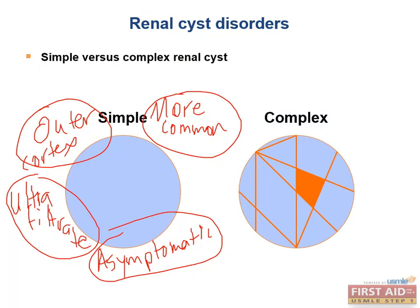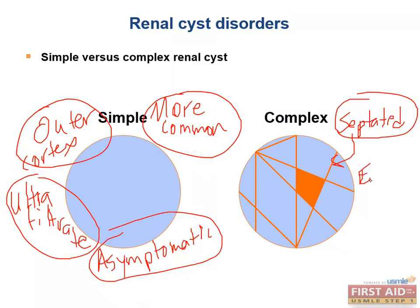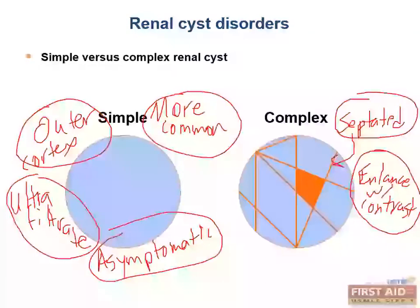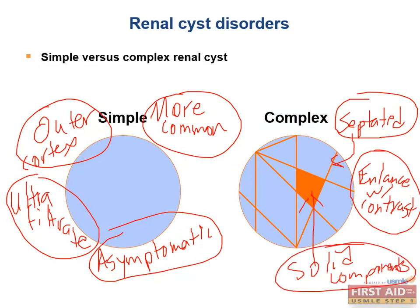Complex cysts, on the other hand, are septated — they have walls that divide them into smaller parts. They enhance with contrast on CT because they have some vascularization, and they have solid components. These require follow-up or removal due to the risk of malignancy, such as renal cell carcinoma.